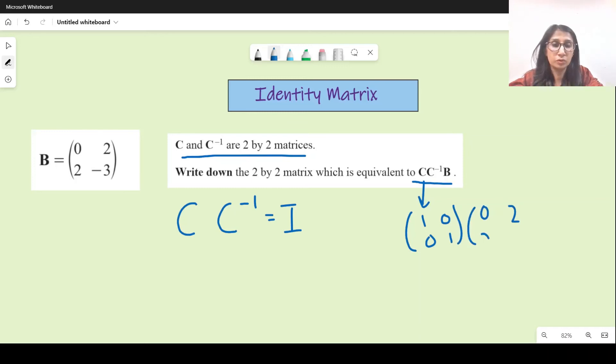And we already know that identity times B gives us B, so the answer for this question is just matrix B itself.